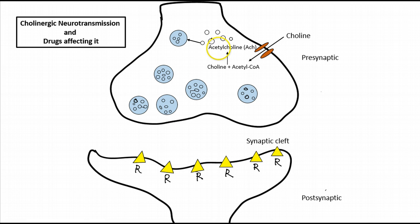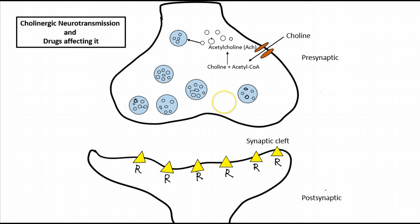Once acetylcholine is formed, it is stored in vesicles — balloon-like structures that store the acetylcholine neurotransmitter. These stored vesicles are ready to be released. Whenever there is activation of the presynaptic neurons or signal transduction, it leads to release of acetylcholine through a process called exocytosis.